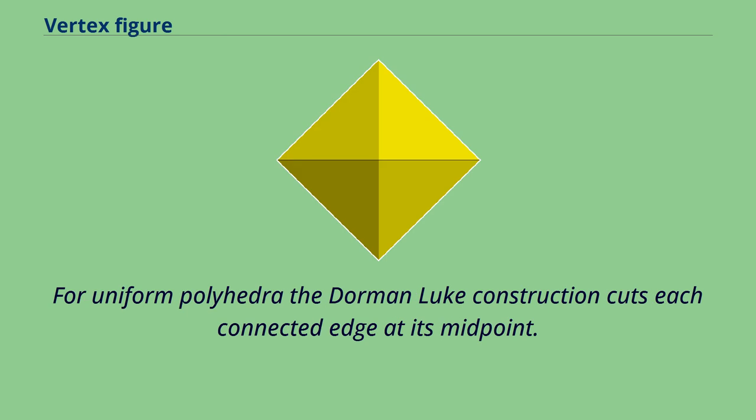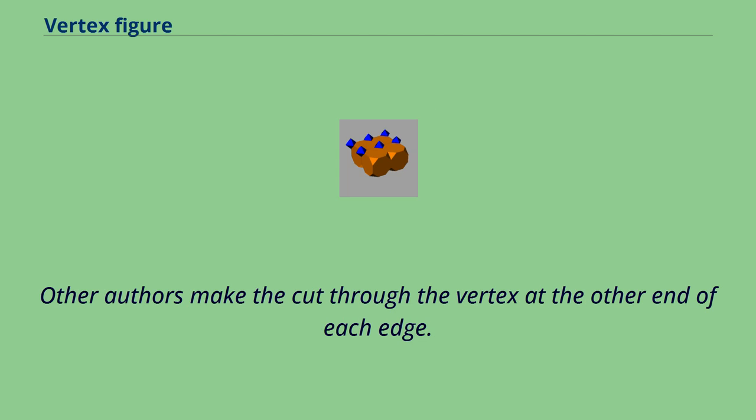For uniform polyhedra, the Dorman-Luke construction cuts each connected edge at its midpoint. Other authors make the cut through the vertex at the other end of each edge.